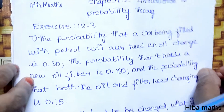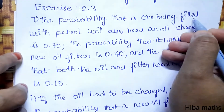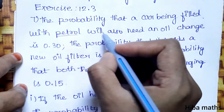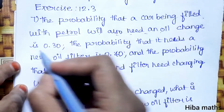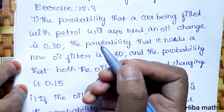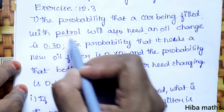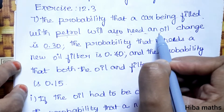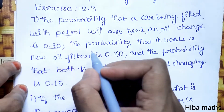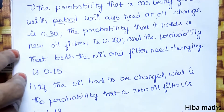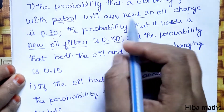7th question. The probability that a car being filled with petrol will also need an oil change is 0.30. If a car is filled with petrol, the probability that the oil will need changing is 0.38. The probability that it needs a new oil filter is 0.40.